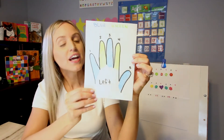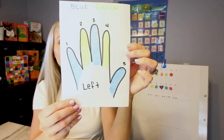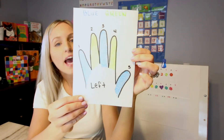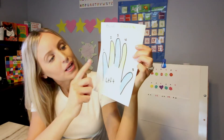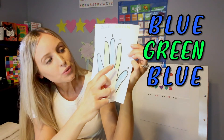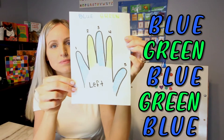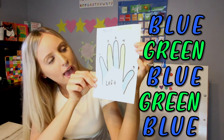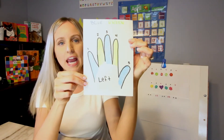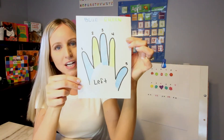So here I have traced my left hand and I colored it in: blue, green, blue, green, blue. Now that I'm looking at this, I've made a pattern.